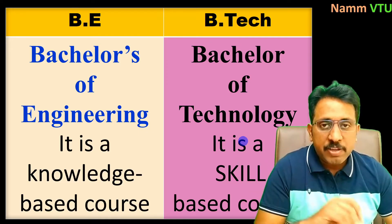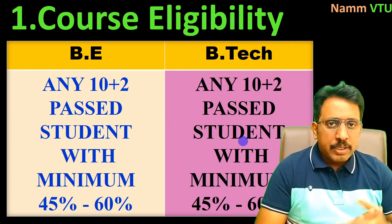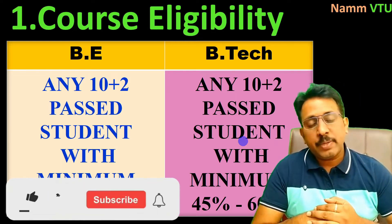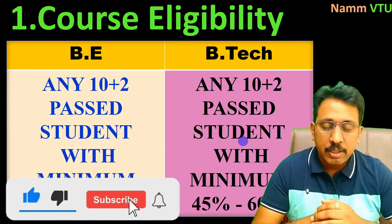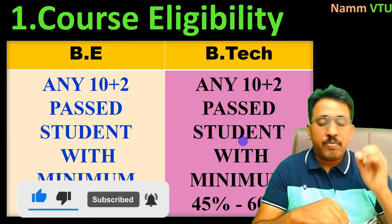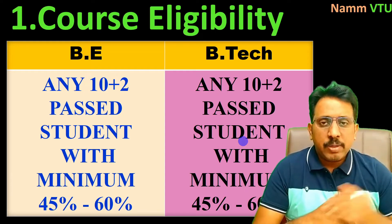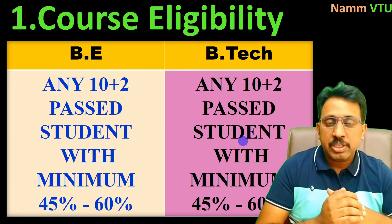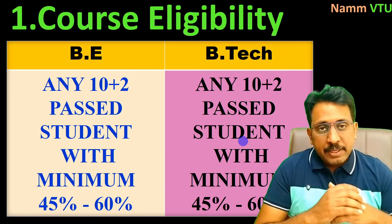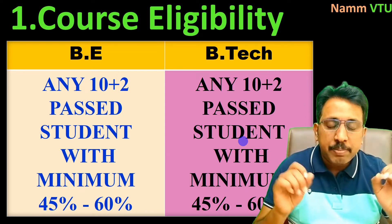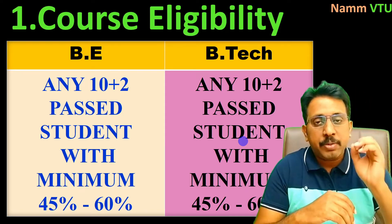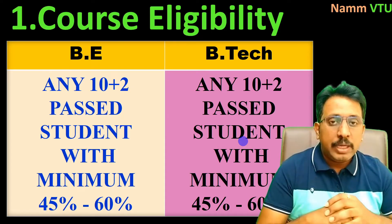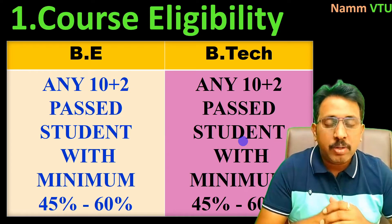The second point is course eligibility. Any student with 10+2 or PUC pass from any state is eligible. You need a minimum percentage of 45 to 60 percent — some colleges require 60 percent, others accept 45 percent. Students who have passed are eligible for engineering. Course eligibility wise, both BE and BTech have the same criteria.